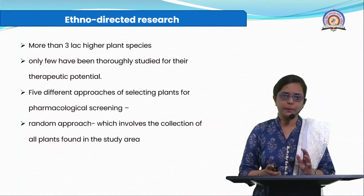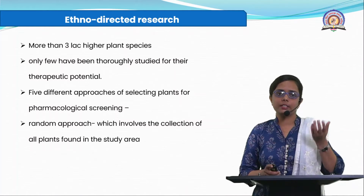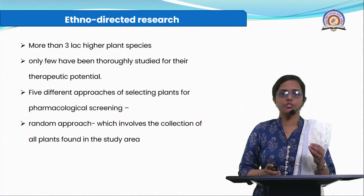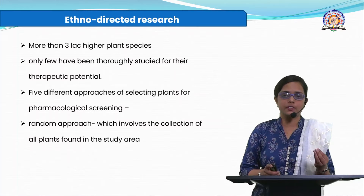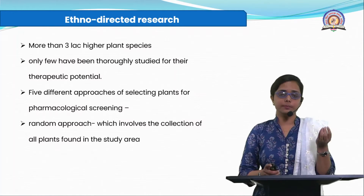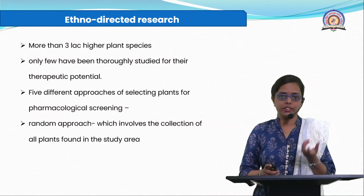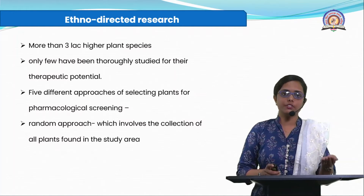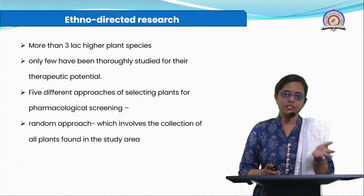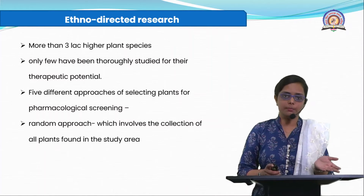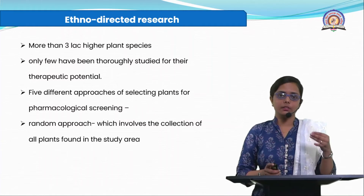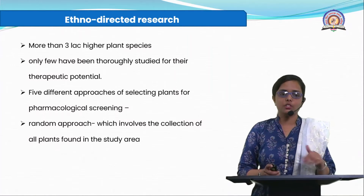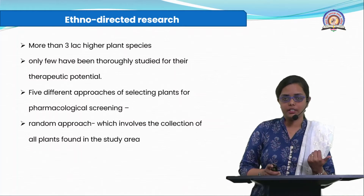The first approach is the random approach — for example, my great-grandmother used a plant called Costus pictus, the insulin plant. She boiled the leaf in her tea and drank it, believing it would reduce her blood sugar. We have many such examples where our elders told us to use a particular plant for a particular condition. That becomes the basis for random selection — I will study that plant.